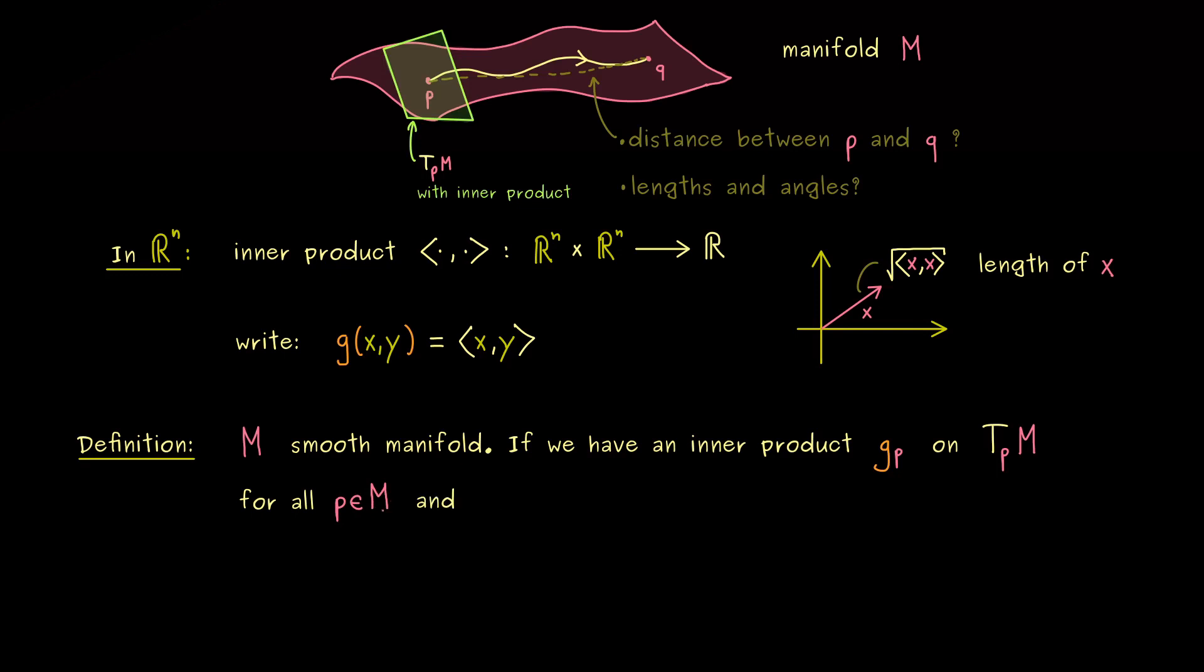And moreover, we want that they are connected in a continuous and differentiable way. This means that the map p to g_p is a smooth map. What this exactly means we will discuss in a moment. First we should note that this map g that sends p to g_p is called a Riemannian metric.